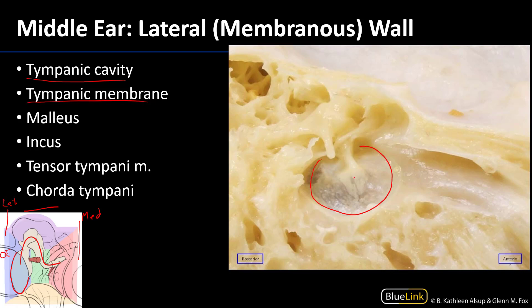The handle of the malleus is inserted on the tympanic membrane such that when the tympanic membrane vibrates, the malleus is going to vibrate. The malleus connects to the incus, which we can see here, and here's part of the head of the malleus. This particular temporal bone has been cut in half and the remainder removed, so the stapes has been removed.